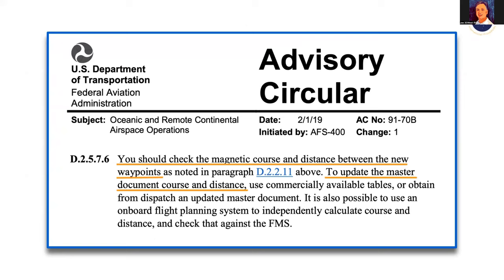A second way to determine the mag course and distance is to use an onboard flight planning system to independently calculate the course and distance and check it against the FMS — and that would be ForeFlight. For most of my career we did not have a mechanism for this. What we have today is extraordinary in terms of power, reach, and capability. Most of you will have an onboard flight planning system available that can quite easily and accurately perform this function.